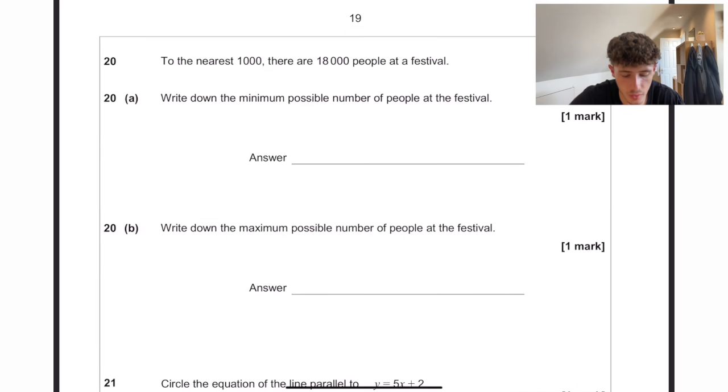To the nearest thousand, there are 18,000 people at a festival. The minimum that could be is 17,500. The maximum would be 18,499.